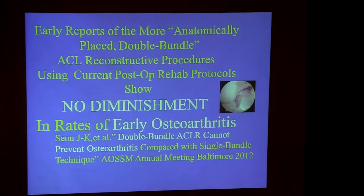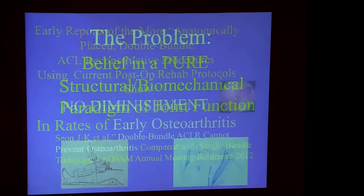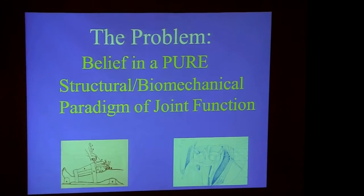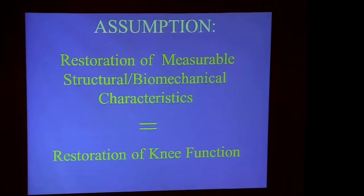The early reports of the double bundle technique, developed by Freddy Fu of Pittsburgh, were supposed to solve this problem — but it has not. The problem is not solved by a structural approach; it shows no diminishment in rates of early arthritis. The problem, in my opinion, is a belief in a pure structural and biomechanical paradigm of joint function — the assumption that restoring measurable structural and biomechanical characteristics restores knee function. This has been the basis of orthopedics for decades.